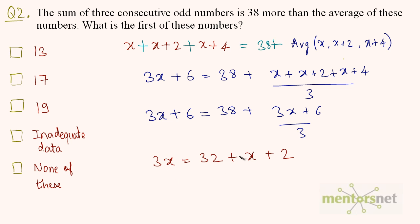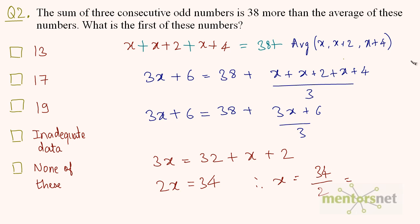Moving x to the left-hand side: 3x minus x gives 2x, which is equal to 32 plus 2, which is 34. Therefore, x is equal to 34 divided by 2, which is equal to 17. Therefore, our answer is option B.